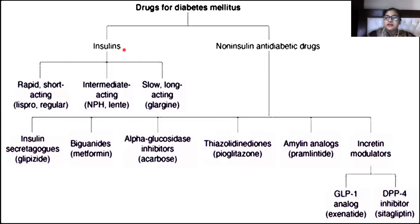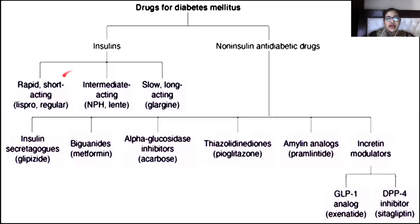Insulin is used to treat diabetes mellitus type 1. There are two types of diabetes: diabetes mellitus, where glucose levels are the problem, and diabetes insipidus, where there is excessive thirst and frequent urination. For insulin types, we have rapid/short-acting, intermediate-acting, and long-acting forms. Non-insulin anti-diabetic agents are also available.